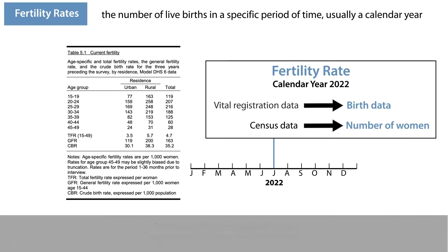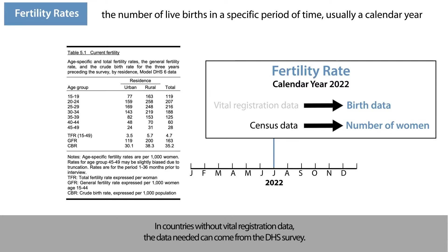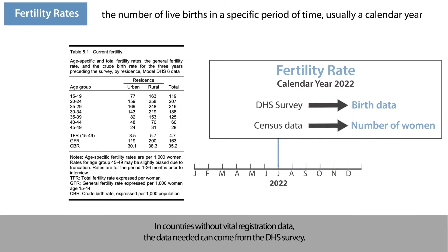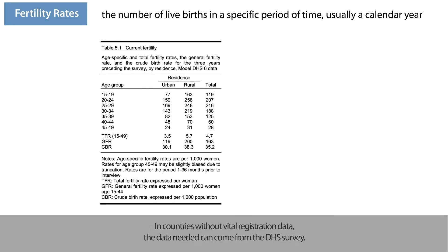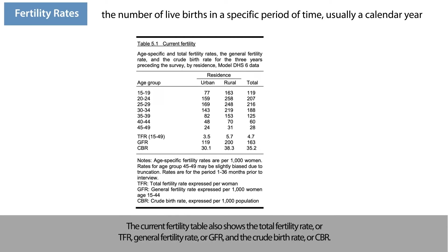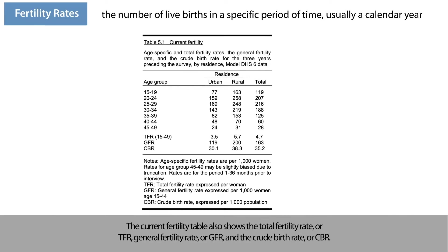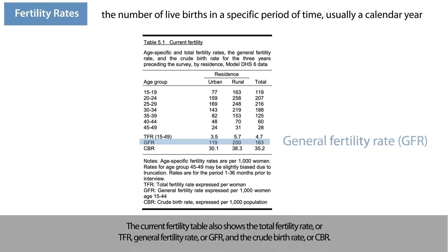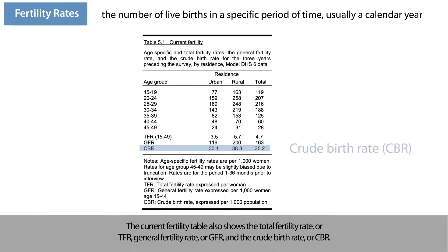In countries without vital registration data, the data needed can come from the DHS survey. The current fertility table also shows the total fertility rate or TFR, general fertility rate or GFR, and the crude birth rate or CBR.